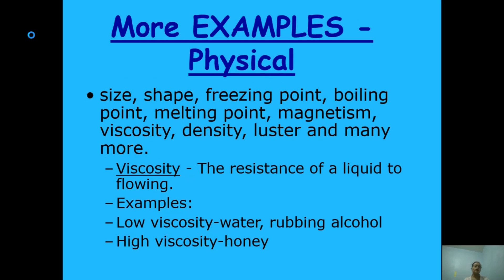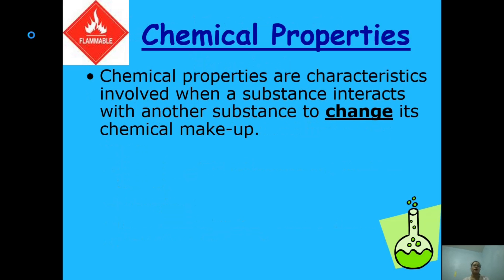More examples of physical properties include size, shape, freezing point, boiling point, melting point, magnetism, viscosity, density, luster, and many more. When we say viscosity, it is the resistance of a liquid to flowing. Examples of low viscosity are water and rubbing alcohol. An example of high viscosity is honey.